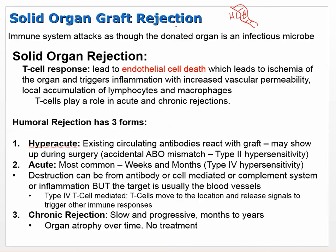After organ transplants, some rejection can occur. A T cell response leads to endothelial cell death - meaning blood vessel destruction - which leads to ischemia of the organ. This triggers inflammation with increased vascular permeability, local accumulation of lymphocytes and macrophages as the immune system tries to get rid of the organ. T cells play a role in both acute and chronic rejection.